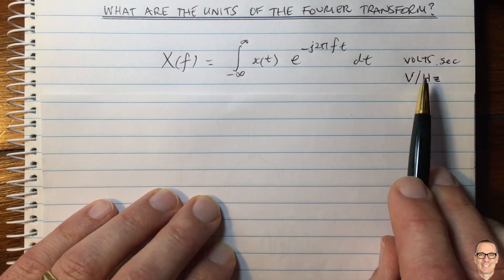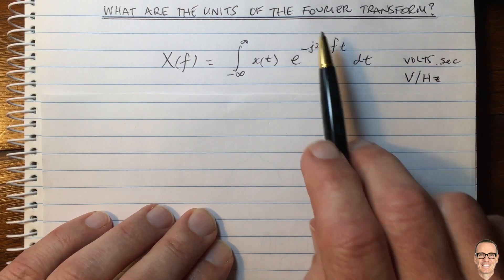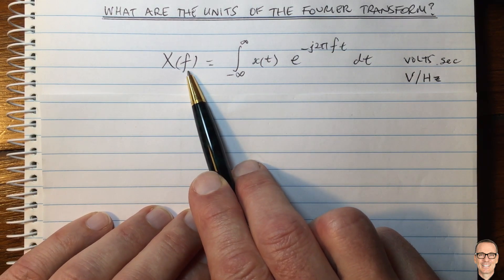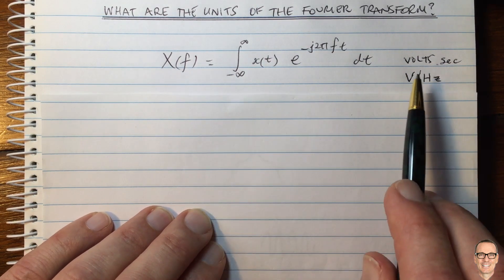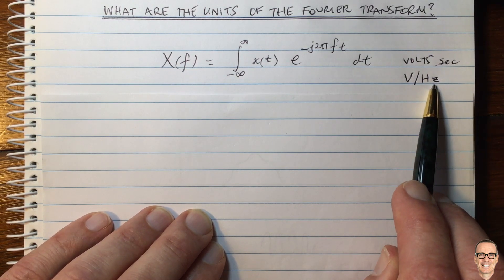But this points out to us that it is, in fact, a density function. The Fourier transform, this function here, is actually a density function. Well, what do we mean by density function? Because it's volts per hertz, when you're dividing by hertz, that means it's a density function. It's not just the volts.